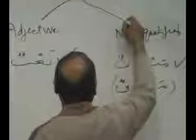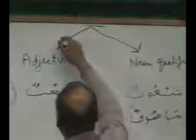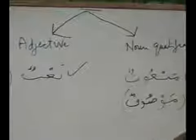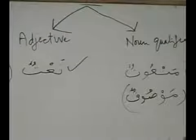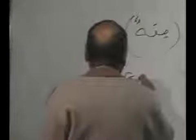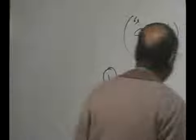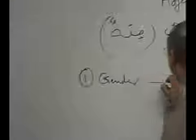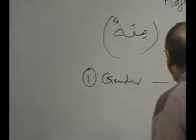Now, there are four things you have to understand in adjectives. There is a special relationship between adjectives and noun qualified — a very special relationship. What is the first relationship? First is gender — masculine and feminine.